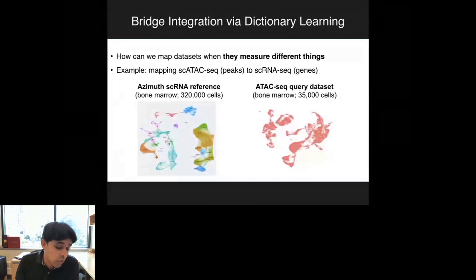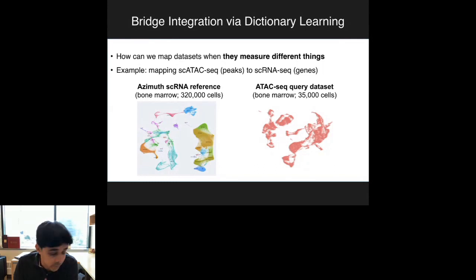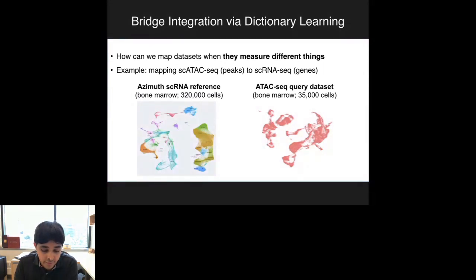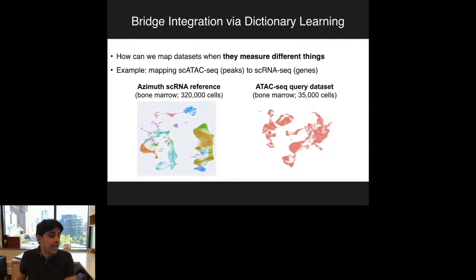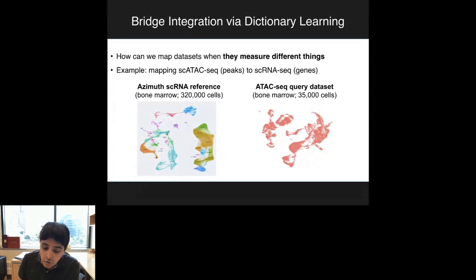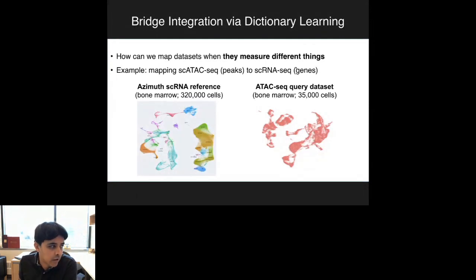This reference is quite comprehensive—we integrated single-cell RNA-seq data from a wide variety of datasets in the literature, with hundreds of individuals represented and a comprehensive list of cell types. That's great if you have your own single-cell RNA-seq data from the bone marrow. But what if you're using a different technology? For example, the Greenleaf lab published a very nice single-cell ATAC-seq dataset from the bone marrow, which is very valuable for understanding chromatin state changes over the process of differentiation. But when we do single-cell RNA-seq we measure genes, and when we do single-cell ATAC-seq we measure peaks—so how can we integrate these datasets when we've fundamentally measured different things?